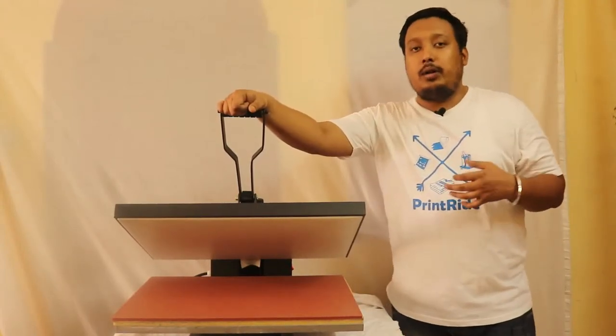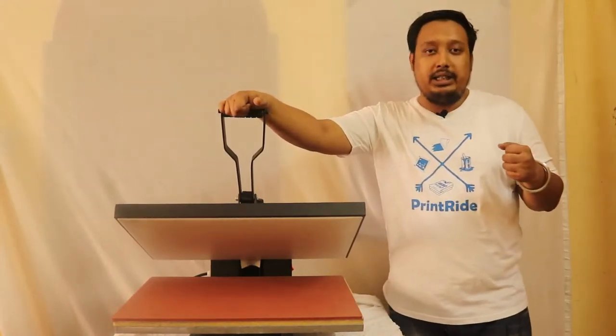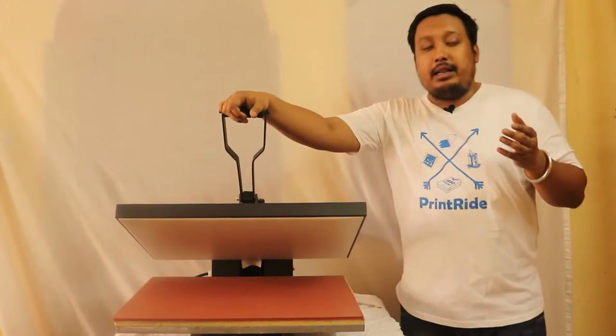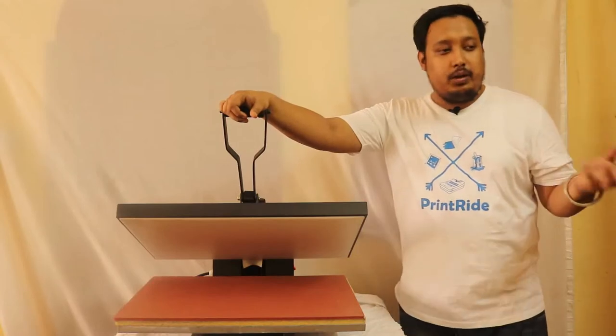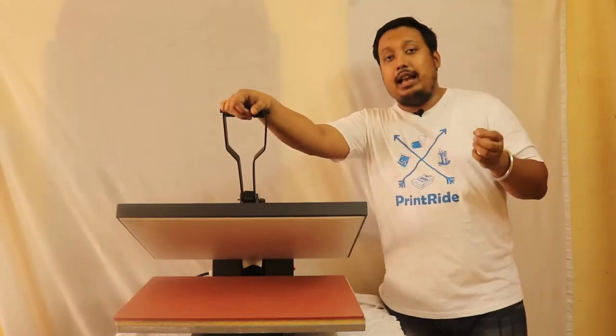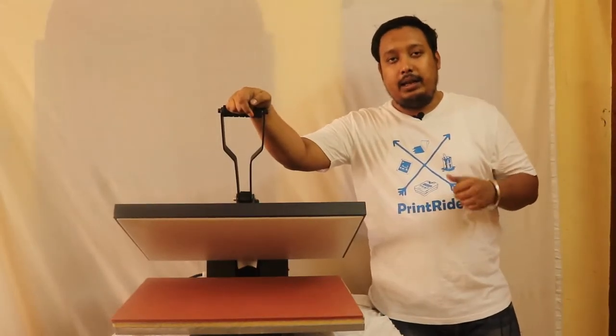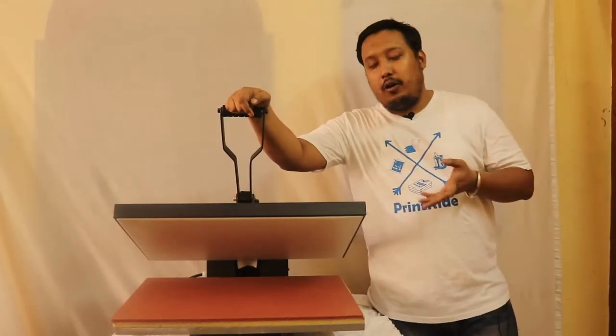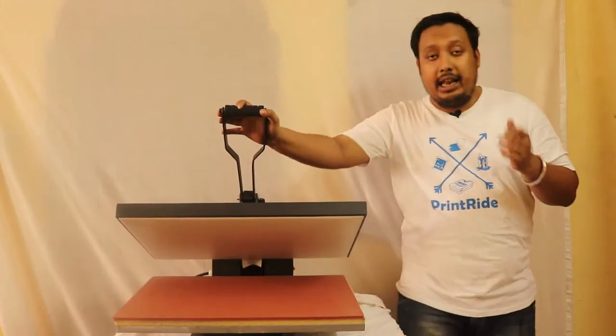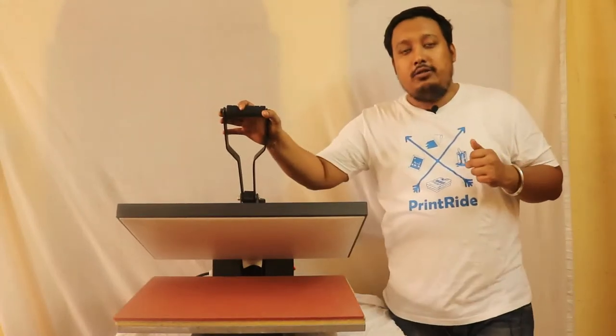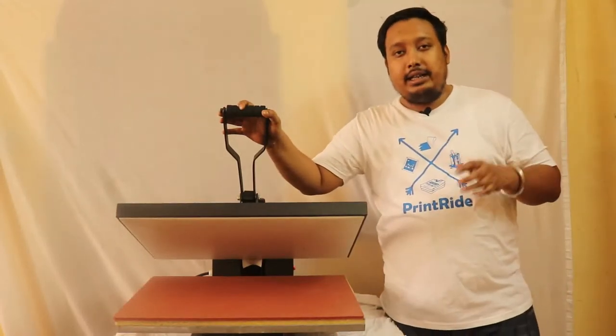This way you can do your printing job. This is a very useful tool in your screen printing journey. Always keep it in good condition by using a stabilizer and don't use it in extreme weather conditions. Don't put any water on it. One more thing: this machine comes with one year warranty. All the spares and parts are available at PrintRide. Thanks for watching. Like our video, subscribe our channel, and share our video so we can reach lots of people. Thanks everyone, see you.